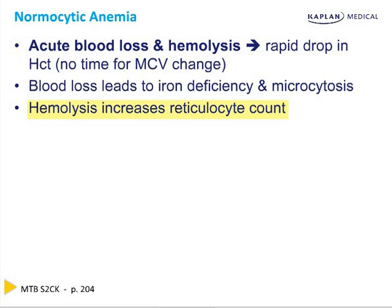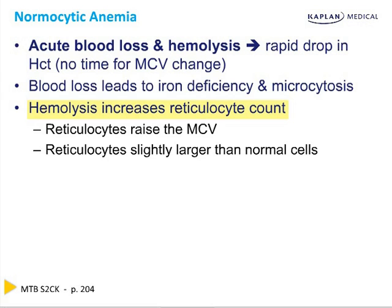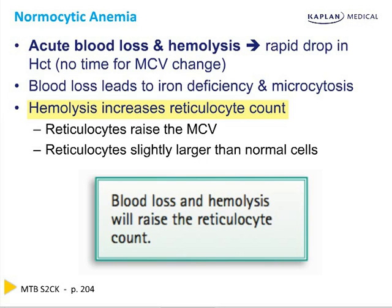Over time, blood loss makes you iron deficient. Hemolysis increases the reticulocyte count, and reticulocytes are larger — about an MCV of 120. So if you go to a 10 or 15 percent reticulocyte count, it can raise the MCV a little bit. Both blood loss and hemolysis raise the reticulocyte count.